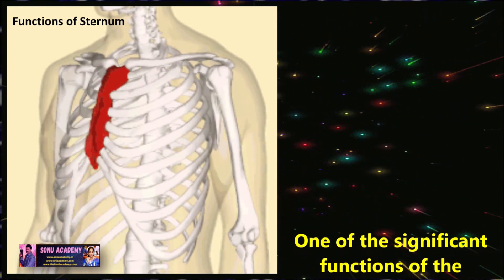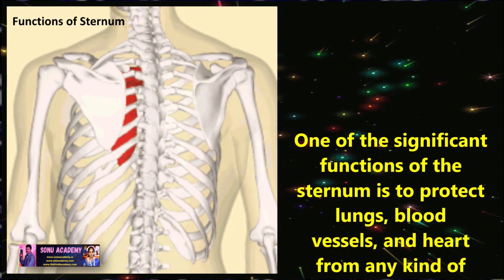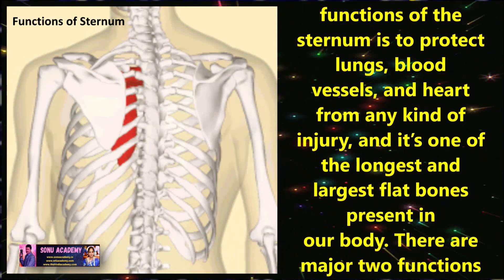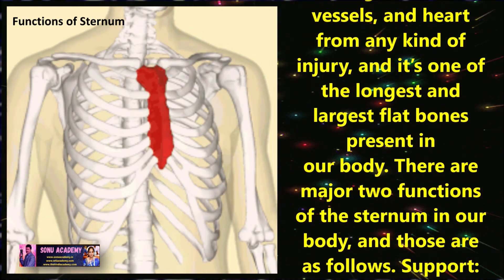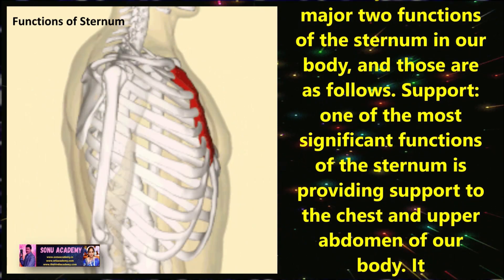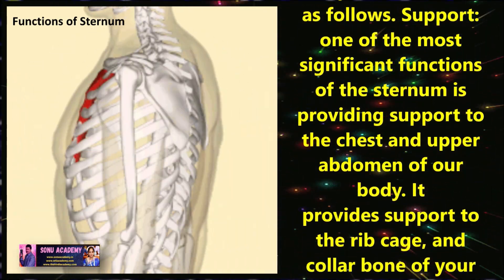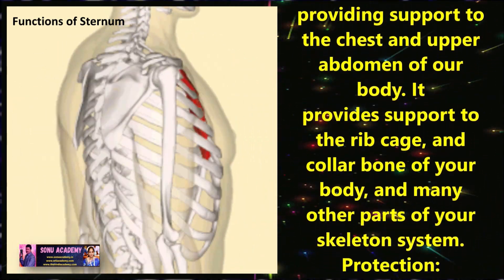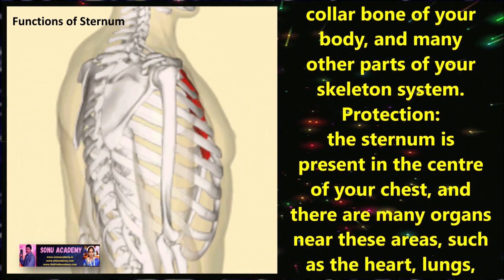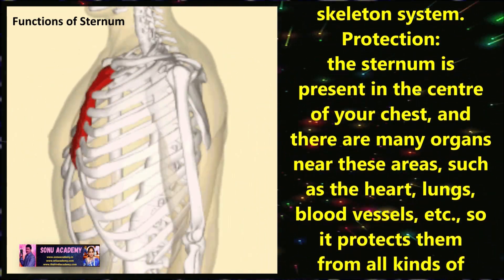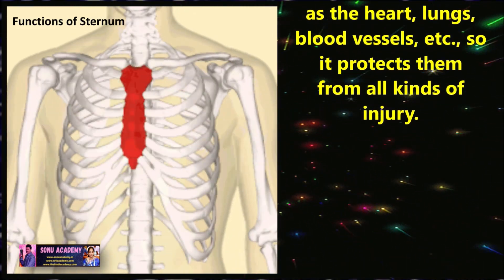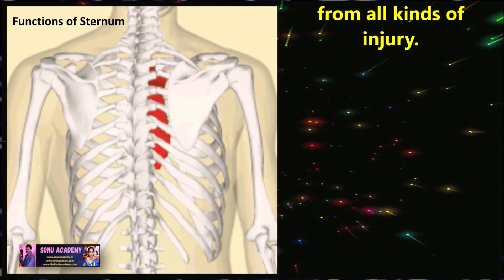Now let us discuss the functions of sternum. One of the significant functions of the sternum is to protect the lungs, blood vessels and heart from any kind of injury. There are two major types of functions: first, support — the sternum provides support to the chest, upper abdomen, ribcage and collarbone. Second, protection — the sternum is present in the center of the chest near organs such as the heart, lungs and blood vessels, and it protects them from all kinds of injury.